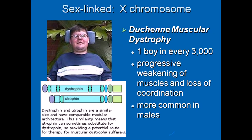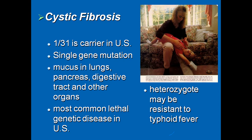Another sex-linked condition is Duchenne muscular dystrophy. It is predominantly seen in one boy in every 3,000. It is a progressive weakening of muscles and loss of coordination between muscles, so muscle twitching starts to occur without reason. It is more common in males. The chromosome involved becomes very much shortened in size, which causes the problem.